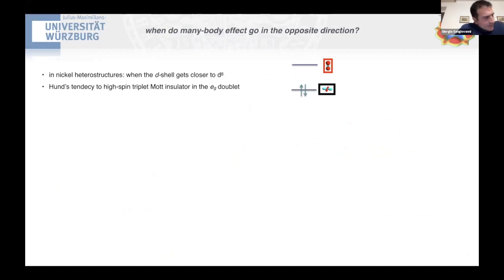So far, I've discussed the case of the enhancement of the crystal field splitting. When do we get the other possibility, namely, when do we get an opposing effect of the many-body correction to the crystal field? This is still taking our example, initial example of the nickel heterostructures. This is obtained when you raise the filling from one electron in the EGs to two electrons. So when you go to D8, because in that case, the Hund's coupling starts to become much stronger and wants to create a high-spin triplet Mott insulator in the ground state. And so it effectively reduces the splitting of the DFT.